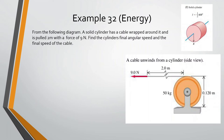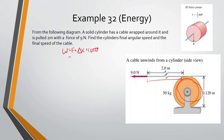Next example: from the diagram, a solid cylinder has a rope wrapped around it and is pulled 2 meters with a force of 9 newtons. We need to find the cylinder's final angular speed and the final speed of the cable. Looking at this — we see forces and distance — so we should think about the work formula.